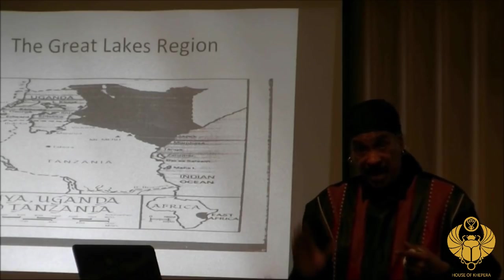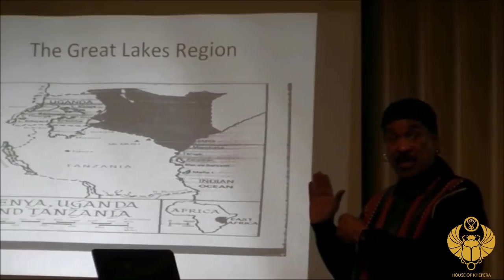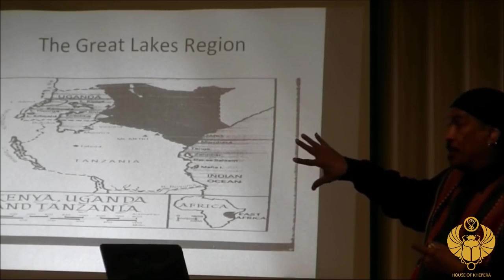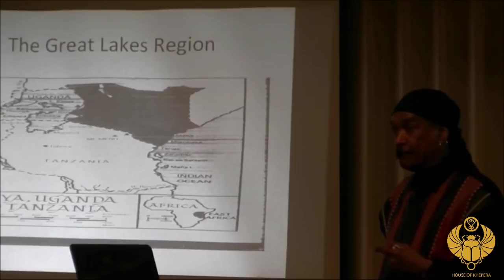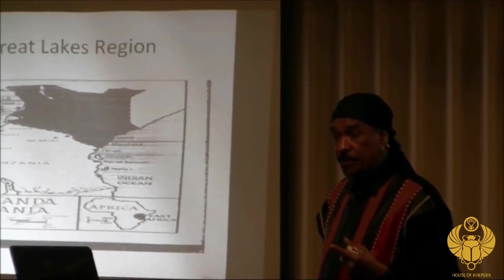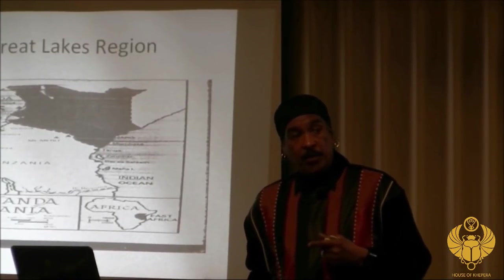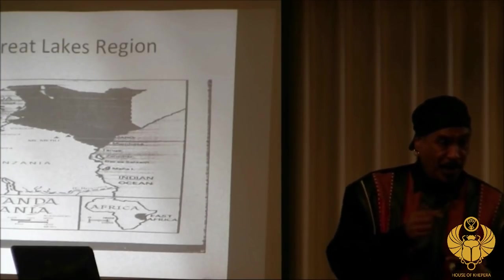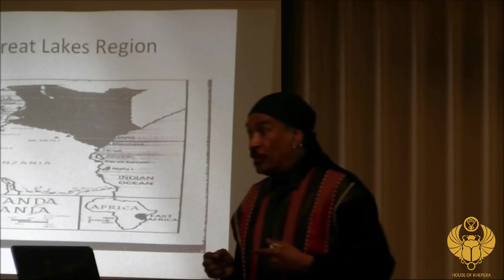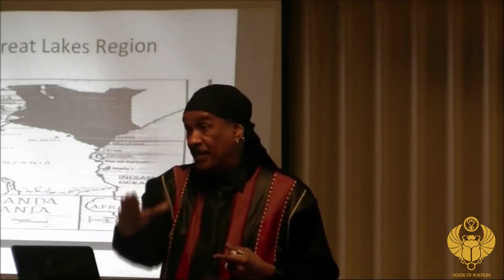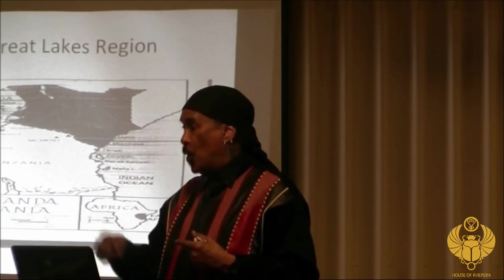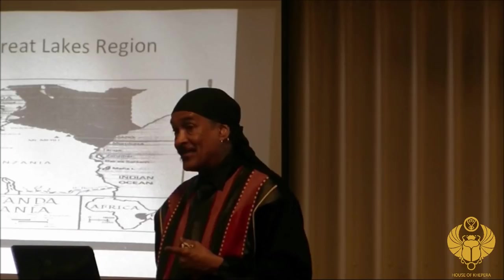Because of that scientific understanding, we now have to take the human family back millions more years — which means African people, the original African people, have been around much longer than science is telling us. Which also tells us that the technological age of Africa has to go back — pyramid builders, temple builders, and the builders of all the wonderful things. We have been great longer than they're willing to let us know.